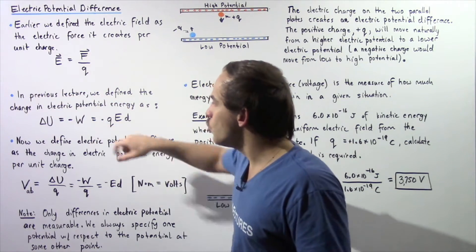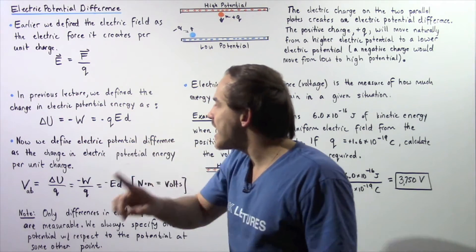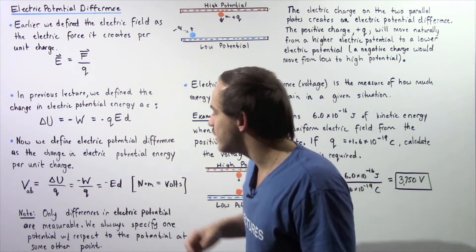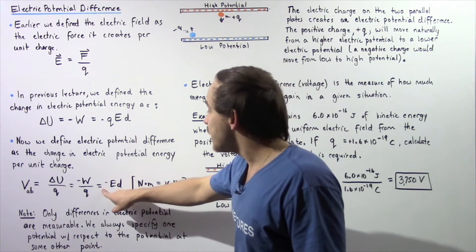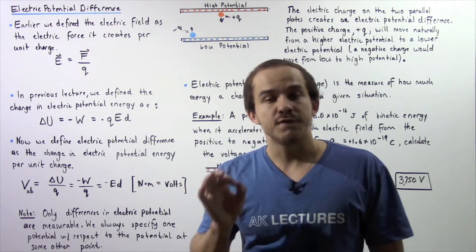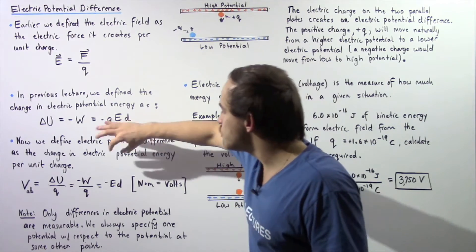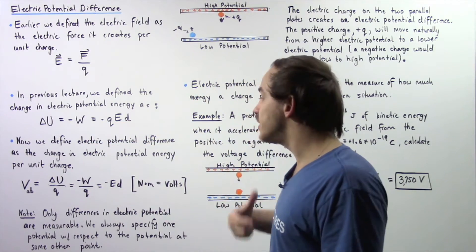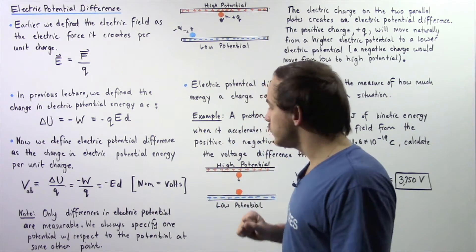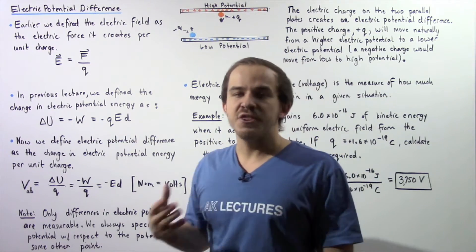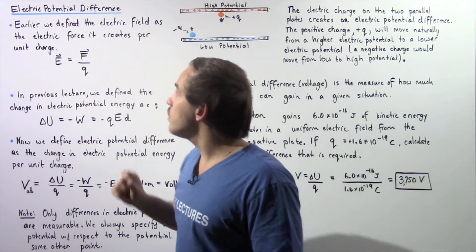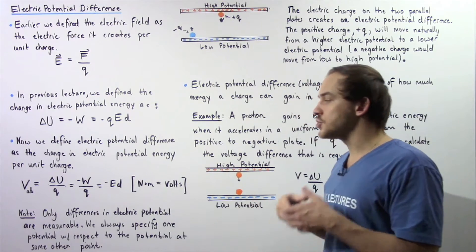We can replace our change in U with negative W, and replace negative W with QEd. Notice the Q's cancel top and bottom, and we're left with E multiplied by d. So the voltage difference, when our electric field is assumed to be constant, equals the electric field multiplied by the distance between point A and point B. The units of voltage are newtons multiplied by meters, and this has a specific name called volts. That's exactly why we call the electric potential difference the voltage difference.